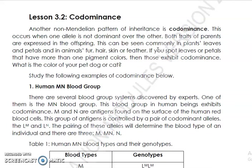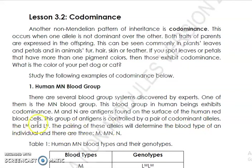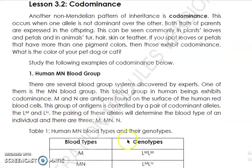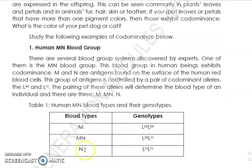A good example of a pattern of inheritance where co-dominance is applicable is the human MN blood group. There are actually several blood group systems discovered by experts, and one of them is the MN blood type. M and N are actually antigens found on the surface of human red blood cells. This group of antigens is controlled by a pair of co-dominant alleles: LM and LN.